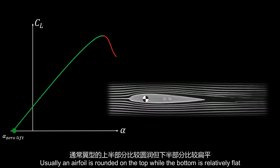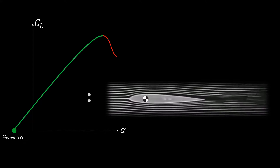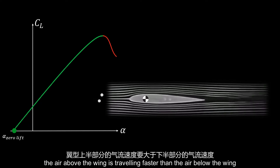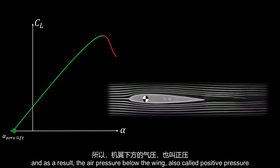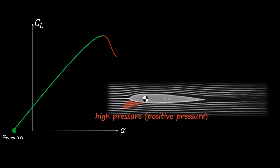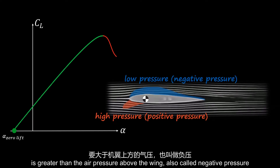Usually an airfoil is rounded on the top while the bottom is relatively flat. Bernoulli's principle and the venturi effect tell us the air above the wing travels faster than the air below the wing. As a result, the air pressure below the wing — also called positive pressure — is greater than the air pressure above the wing, also called negative pressure.